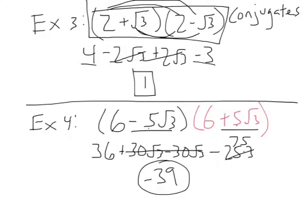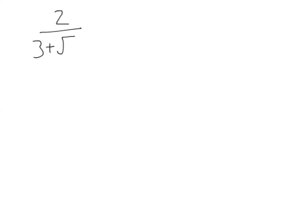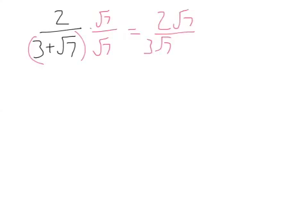That knowledge is important for two more examples. Let's say I have 2 over (3 + √7) and I need to rationalize the denominator. Some of you might want to multiply by radical 7 over radical 7 — don't write this, it's wrong. I'd get 2√7 over (3√7 + 7), which still has a radical in the denominator. So I need to multiply by something else.